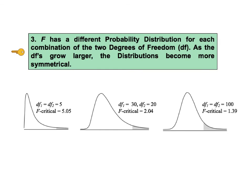Note that the critical value becomes smaller as the degrees of freedom increases, from 5.05 to 2.04 to 1.39 for these three examples. If these graphs were drawn to scale, the distributions would appear narrower as the degrees of freedom grew larger.